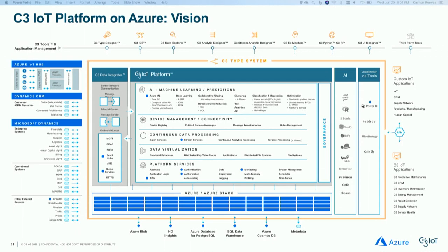This is the C3 IoT platform — our eye chart. If you can read everything from there, congratulations, you've got perfect vision. This is the platform from a holistic perspective. This is actually our platform with our newest partner, Microsoft. On one side you'll see all the data sources we ingest, our C3 data integrator, and then four major components: platform services, data visualization, continuous data processing, and artificial intelligence on top of that. On the end we have custom applications as well as our own white-label applications like predictive maintenance.